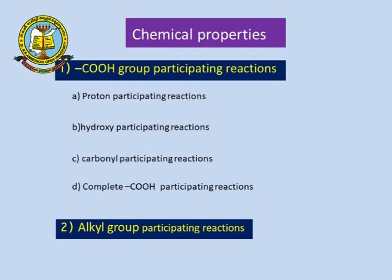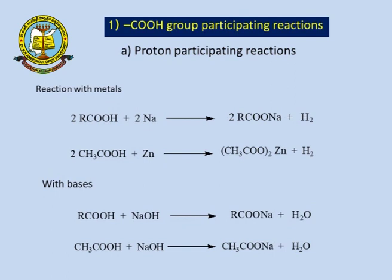The chemical properties of carboxylic acid involve four categories of reactions: proton-participating reactions, hydroxy group-participating reactions, carbonyl group-participating reactions, and complete acid group-participating reactions, plus alkyl group-participating reactions. In proton-participating reactions with metals: two moles of carboxylic acid treated with sodium metal gives sodium acetate, and with zinc metal gives zinc acetate, with hydrogen gas evolved.